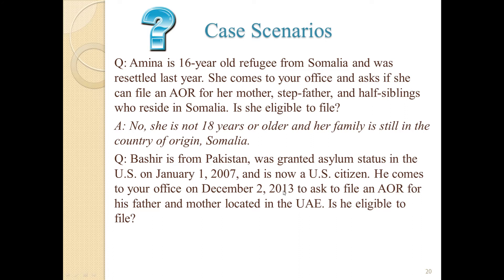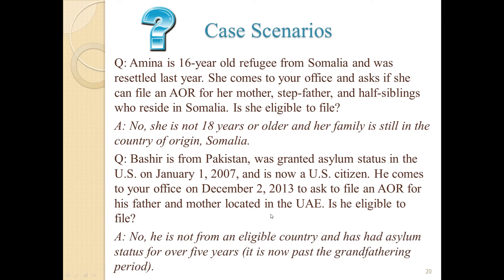Case scenario 2: Bakhtir is from Pakistan. He was granted asylum status in the U.S. on January 1, 2007 and is now a U.S. citizen. He comes in on December 2, 2013 to file an AOR for his father and mother located in the UAE. He is not eligible for two reasons: Pakistan is not on the list of eligible countries, and he has had asylum status for over five years — the grandfathering period is over.